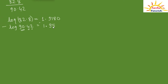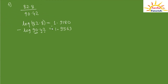Subtracting: 0 minus 3 requires borrowing, giving 10 minus 3 is 7; 8 minus 7 is 1; then 11 minus 5 is 6; 19 minus 10 is 9 carry 1; and 1 minus 2 gives bar 1 (negative 1). So the result is bar1.9617. We need to find the antilog of 0.96 in columns 1 and 7.